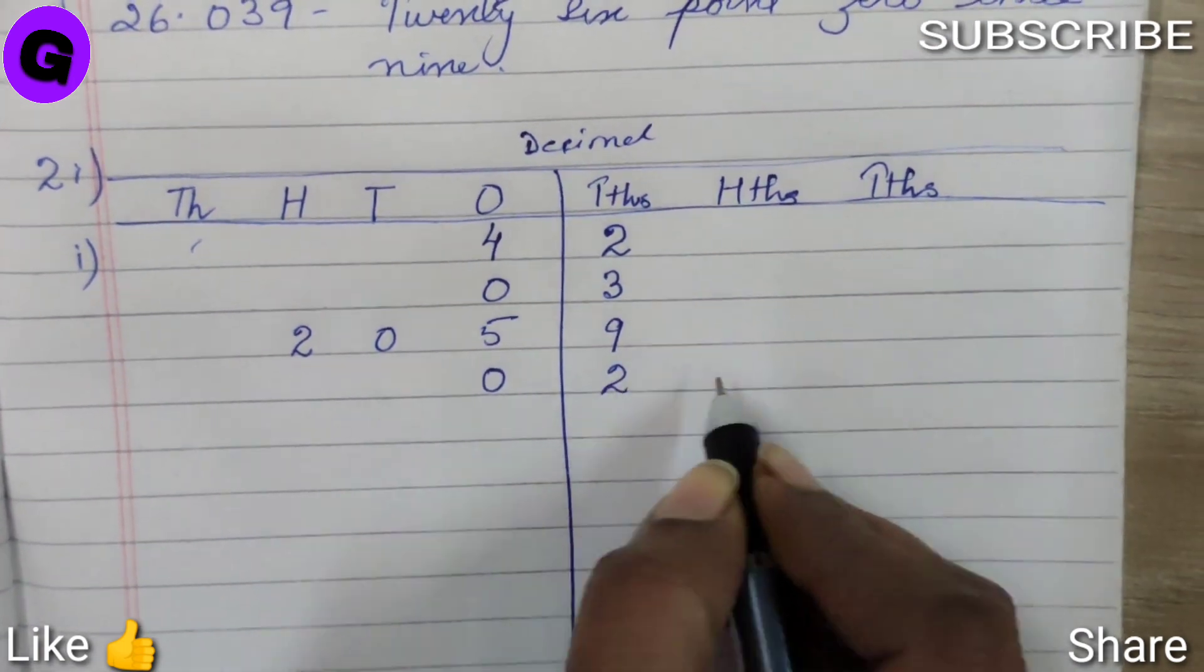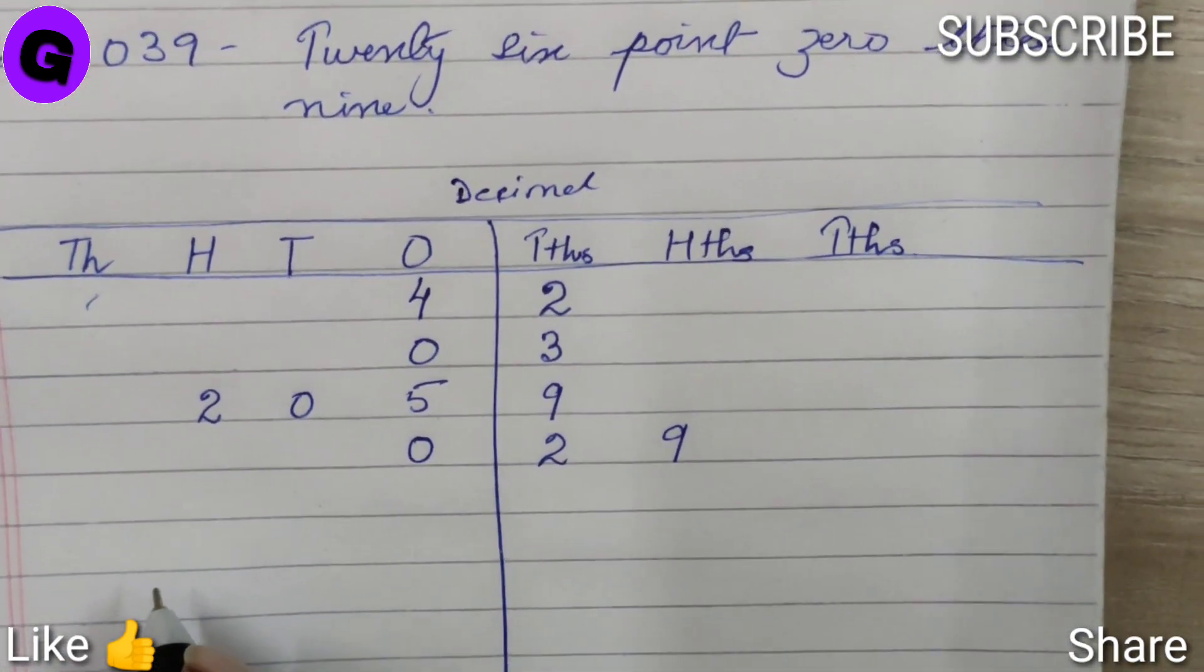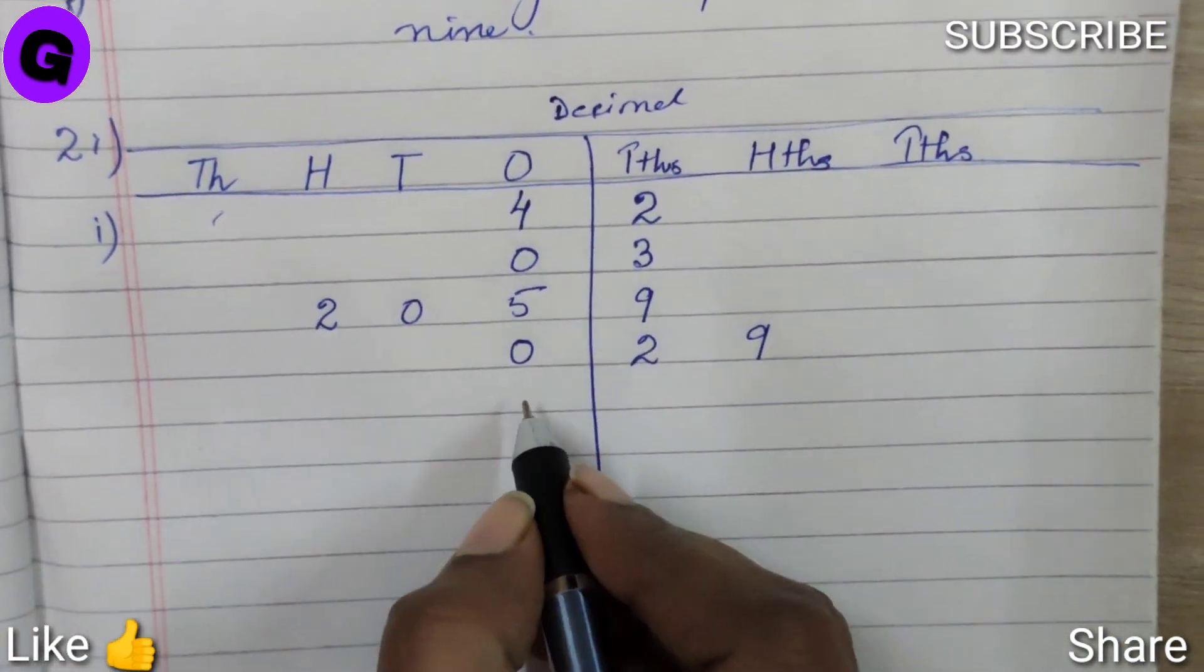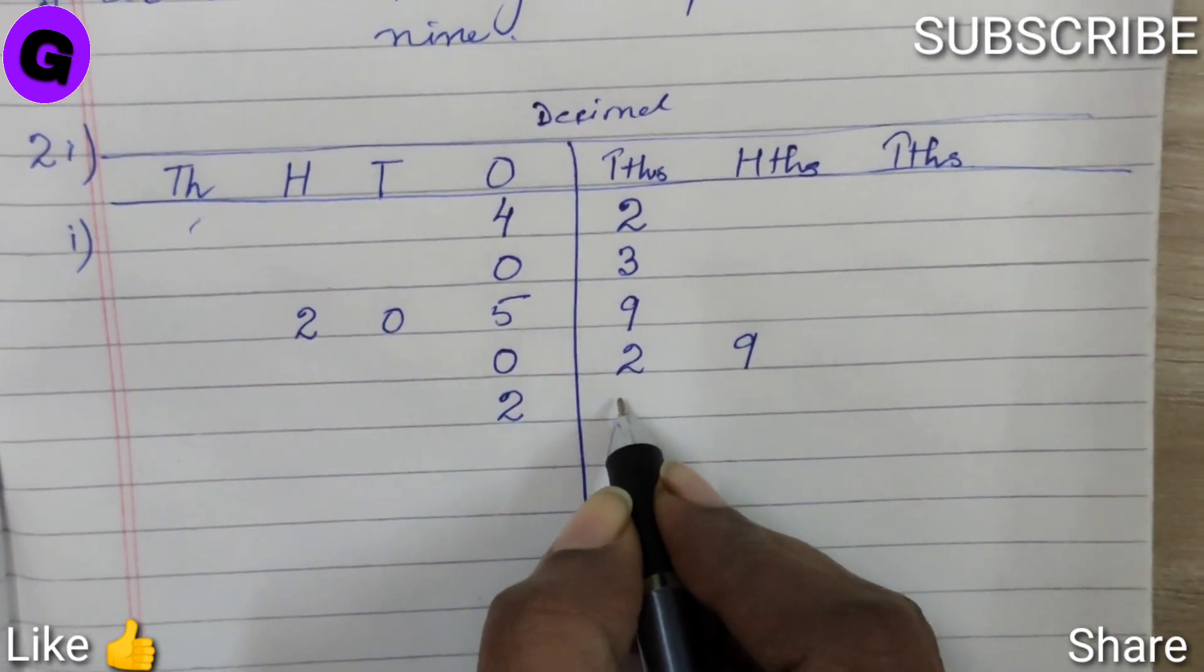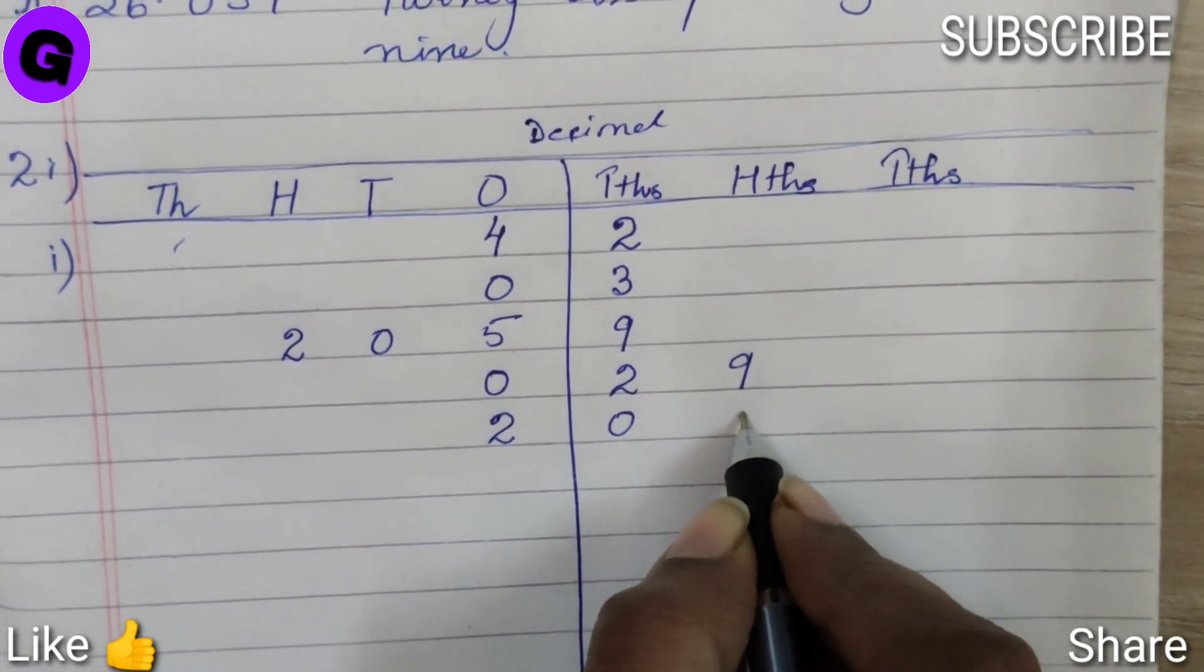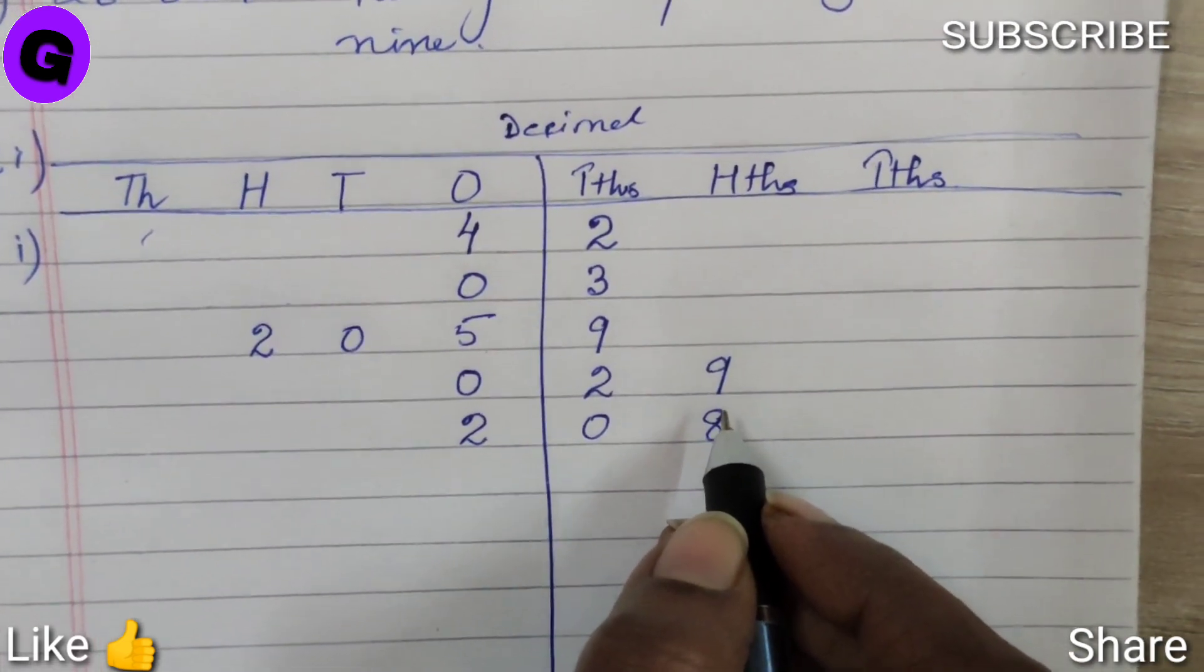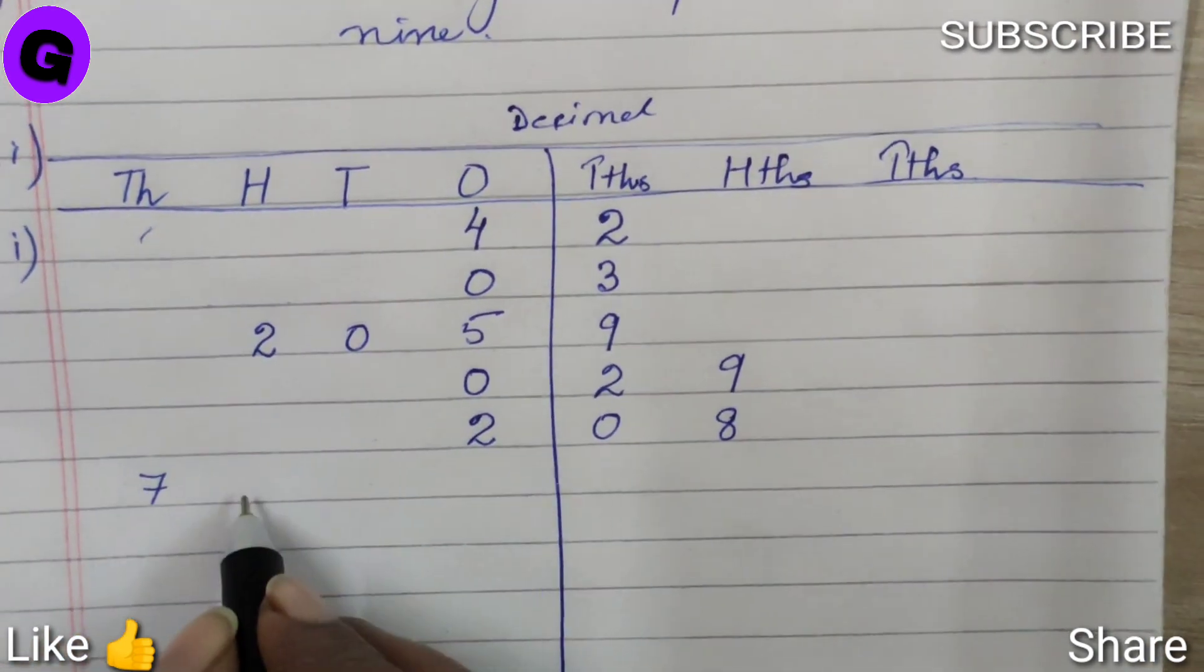Next number 5, 2.08. 2 will be written below ones, point, 0 is tenths, 8 is hundredths. Number 6, 7200, so under thousands column we will write 7, under hundreds column we will write 2, 0, 0.